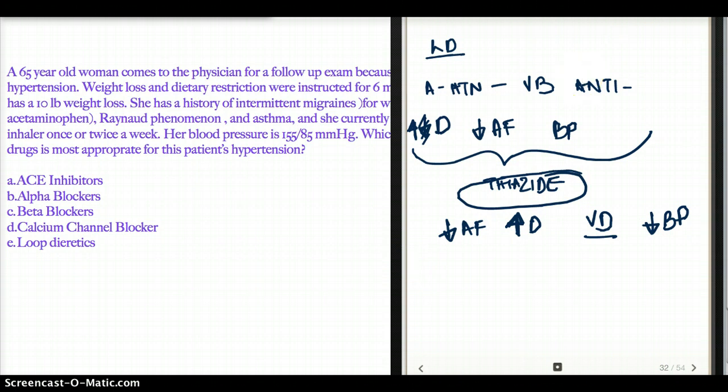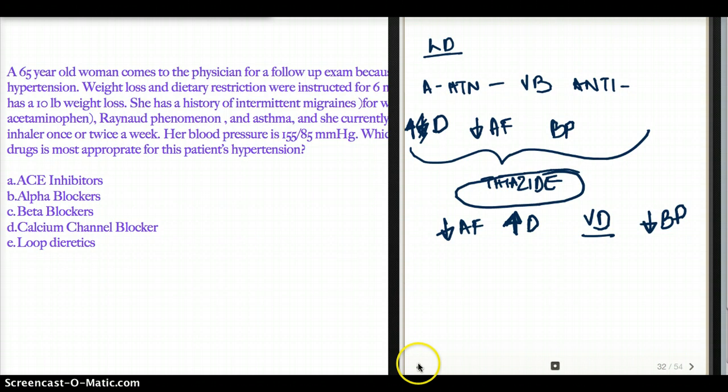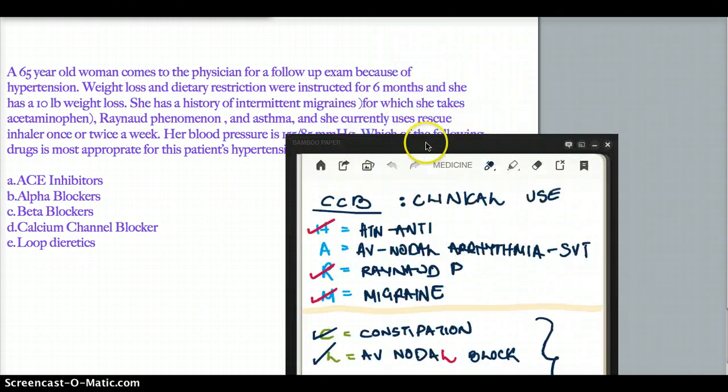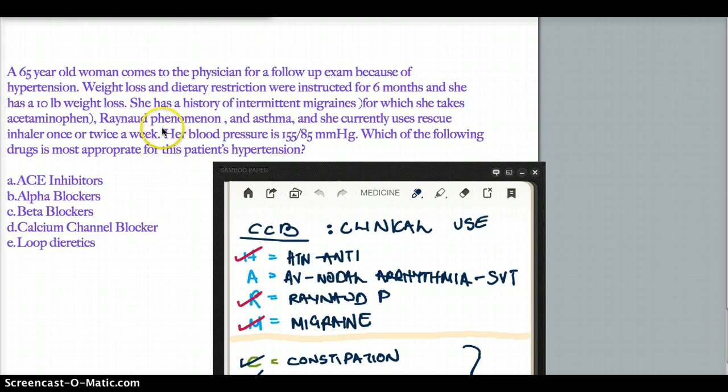So, considering everything into account, we realize that nothing can beat our calcium channel blockers. Because this patient has Raynaud's phenomena, that is going to be helped by calcium channel blockers. This patient is having migraine, that is also going to be helped. And primarily, the question is asking which of the following drugs is most appropriate for this patient's hypertension? They're all antihypertensive, but I'm going to pick calcium channel blockers. So the answer is going to be D.